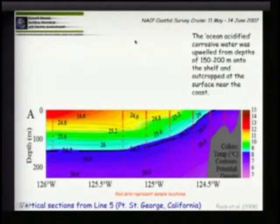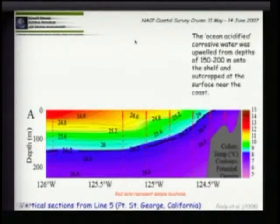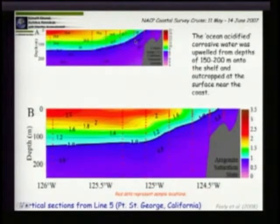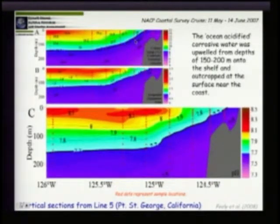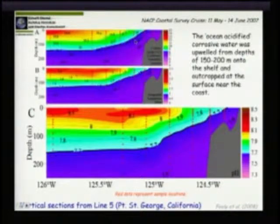What we found was that we do have an upwelling process. The first slide shows temperature and density. On these density surfaces, we see very cold waters — less than 9 degrees — being pushed onto our shelf, in some places moving all the way to the surface and to the coast. These waters carry corrosive under-saturated water with saturation values less than 1.0, and pH less than 7.7. What models project to occur at the end of the century is occurring right now on our continental shelf.